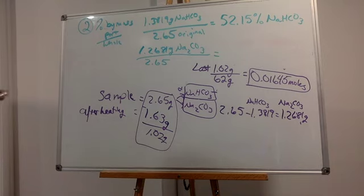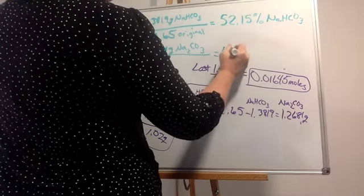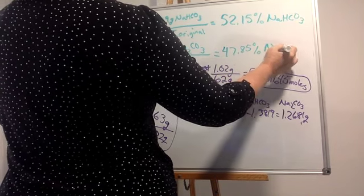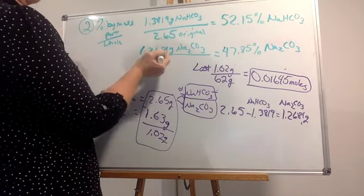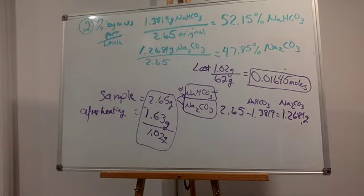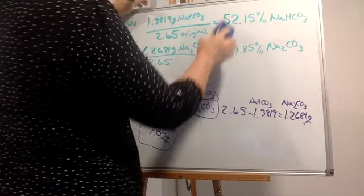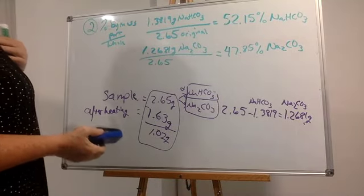When you add these two up, it comes out exactly to 100%. One of the reasons it's exact is because I didn't drop the numbers early — I didn't apply significant digits right away. So that's the percent by mass, and this percent by mass needs to match the one that you originally made.